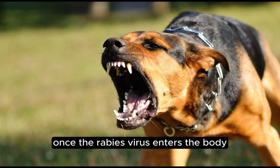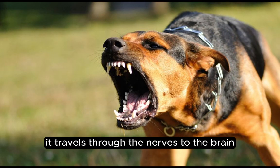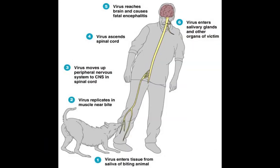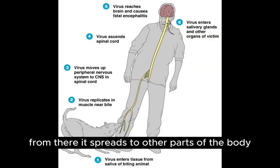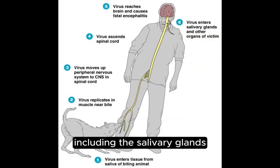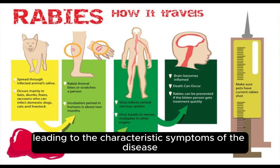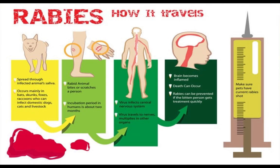Once the rabies virus enters the body, it travels through the nerves to the brain. From there, it spreads to other parts of the body, including the salivary glands, leading to the characteristic symptoms of the disease.